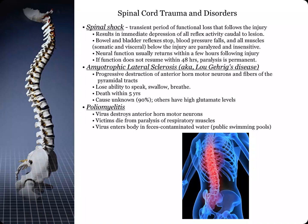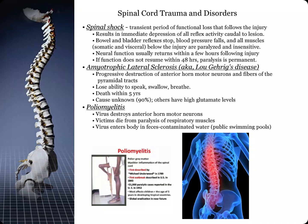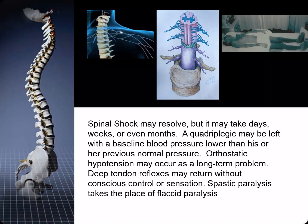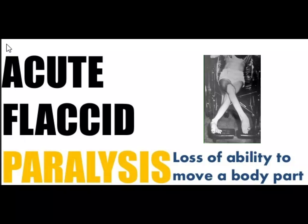Let's look at spinal cord trauma and disorders such as spinal shock, Lou Gehrig's disease, and poliomyelitis. Spinal shock may resolve, but it may take days, weeks, or even months. A quadriplegic may be left with a baseline blood pressure lower than their previous normal, meaning orthostatic hypotension may occur as a long-term problem. The deep tendon reflexes may return without conscious control or sensation. Spastic paralysis takes the place of flaccid paralysis. The key difference is that in flaccid paralysis muscles cannot contract and stay weak and floppy, while in spastic paralysis muscles stay in contraction.